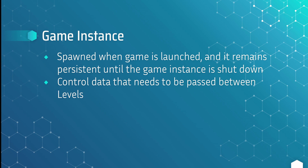The next class is the Game Instance, and one important thing to know is that there is a new instance every time you launch the game. The game instance is spawned when you launch the game and remains persistent until it is shut down — whether you're launching in the Unreal editor, from an exe, or from Steam. The game instance is commonly used to control data that needs to be passed between levels, because information stored in the game mode will be thrown away when you load a new level, so you'd save that to the game instance instead.